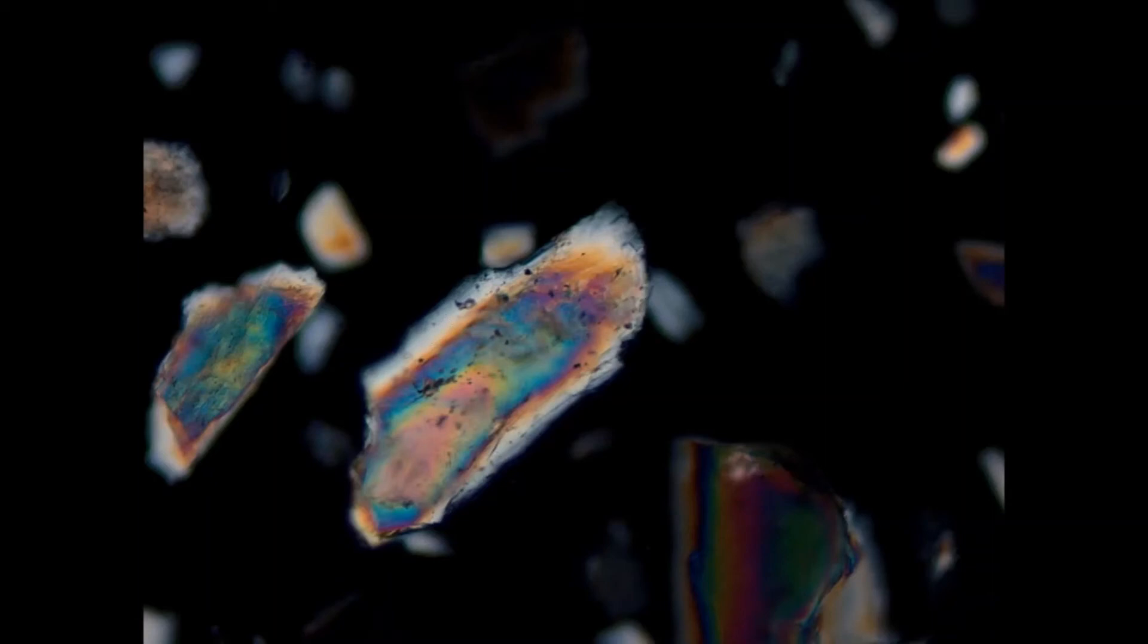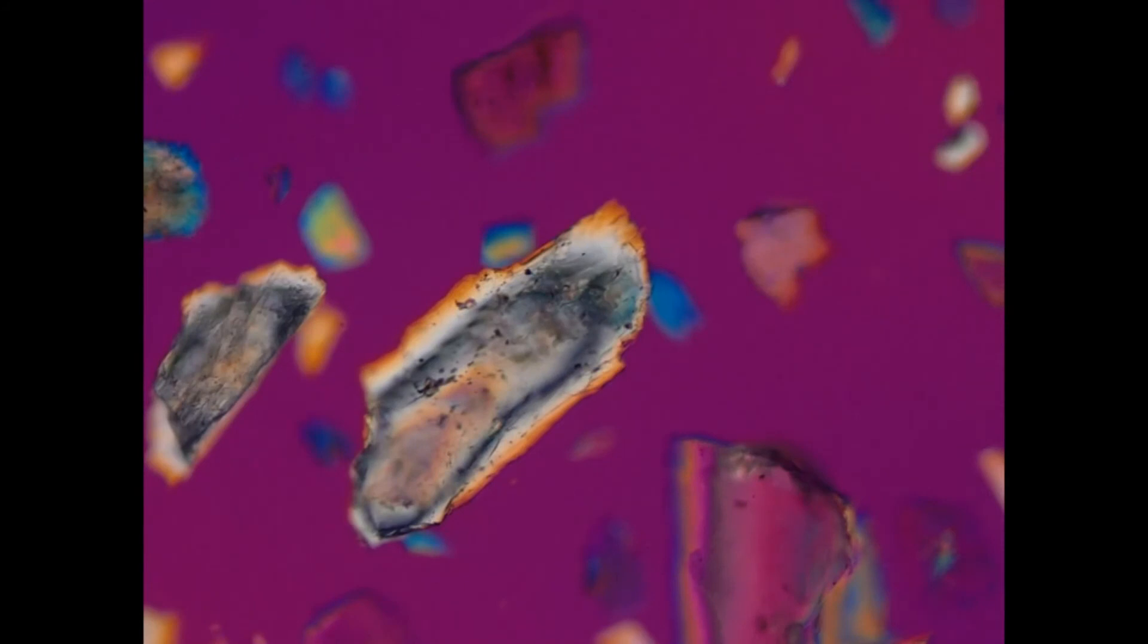If we put in our accessory plate, we can see that these colors change to orange or yellow of the first order, which means that the grain has negative elongation.